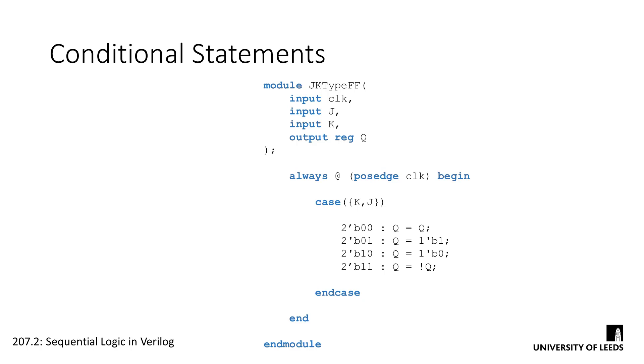Because of the feedback loop in the design, there's the likelihood of the output of the module being in an unknown state. If J and K are set to 0, 0 or 1, 1, the output of the design either keeps its previous state or toggles, respectively.